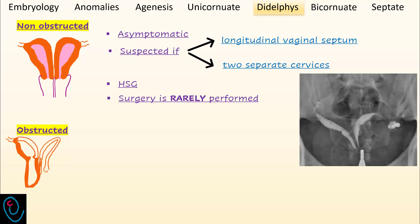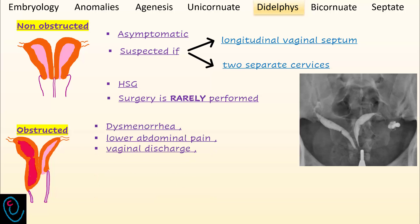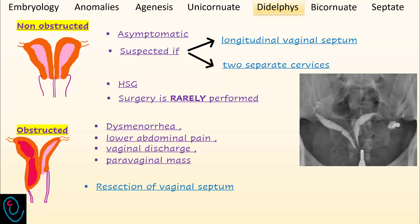On the other hand, the obstructed form of didelphys — for example, OHVIRA — may present with dysmenorrhea, lower abdominal pain, vaginal discharge, and a paravaginal mass. The treatment of choice for OHVIRA syndrome is resection of the vaginal septum in order to relieve the obstructed hemivagina.